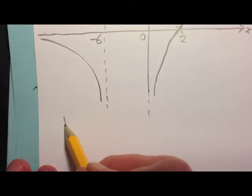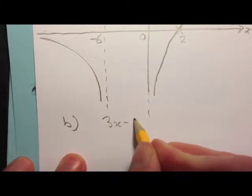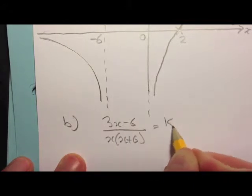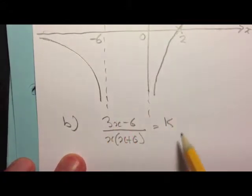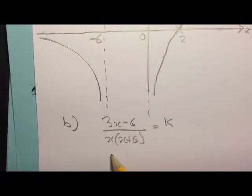Part B: We're solving 3x minus 6 over x brackets x plus 6 equals k. Our approach is straightforward: we're going to expand out this expression, arrange it as a quadratic so it equals 0, and then make some deduction about what it means to have real roots for that quadratic.